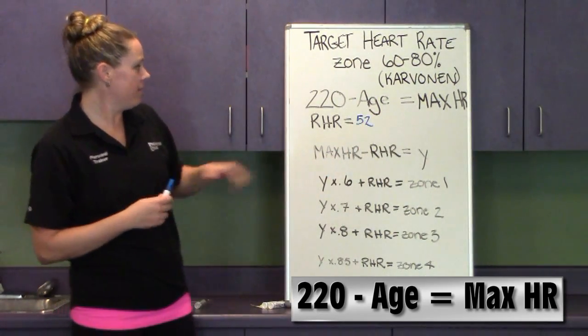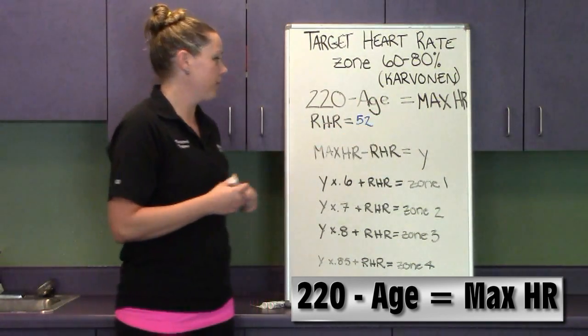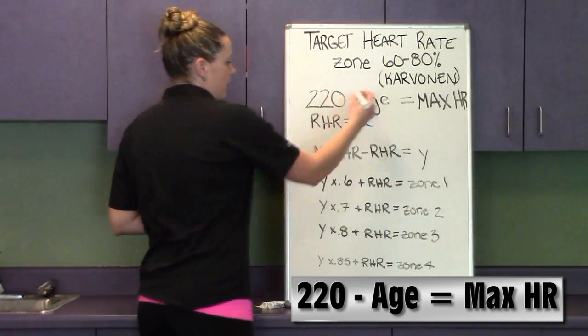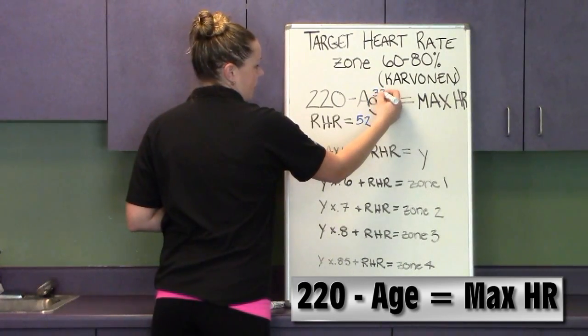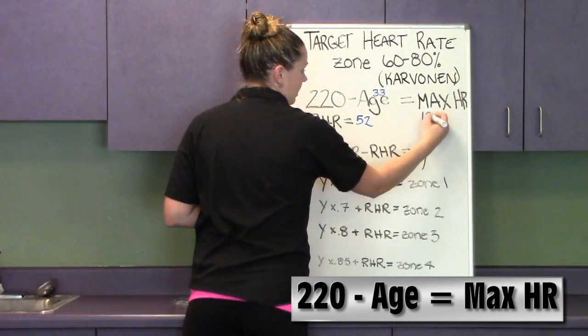So the start of the formula, you're going to take 220 minus your age to get your maximum heart rate. So for me, for example, 220 minus my age of 33 is going to give me a maximum heart rate of 187.